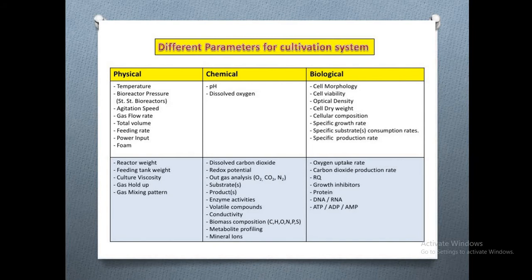The optimum agitation speed you have to set during a fermentation process may vary for many types of organisms. For yeast it may vary, and for bacteria it may vary — it depends on the morphology, size, and shape of the particular microorganism. Then gas flow rate and total volume — the amount of media kept in a fermenter — are also very important physical parameters.